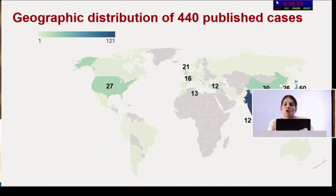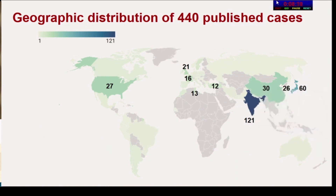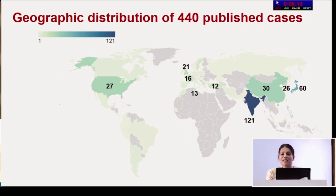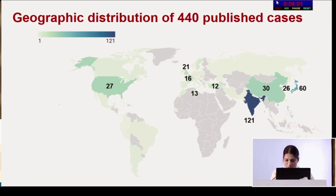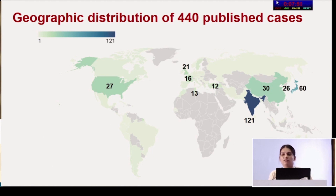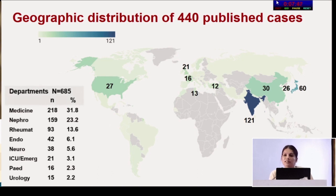The geographic distribution of 440 published cases shows the most cases from India, and 30 from China — though this does not suggest India has more cases than China, as Chinese databases were inaccessible and China may not report individual cases. The majority of Sjogren's syndrome RTA cases are from Asia at 64%, though cases are reported from across the world. The departments most frequently reporting these cases are: medicine, followed by nephrology, rheumatology, endocrinology, and neurology.